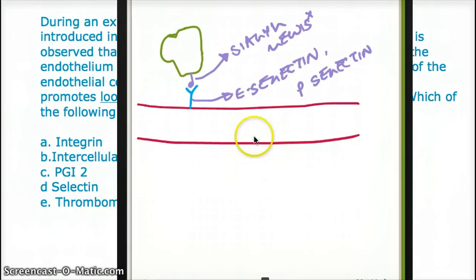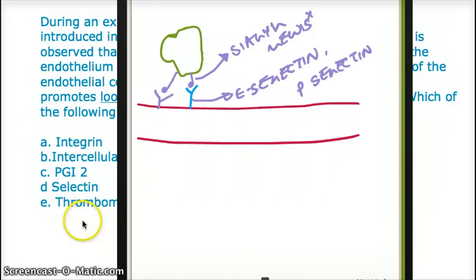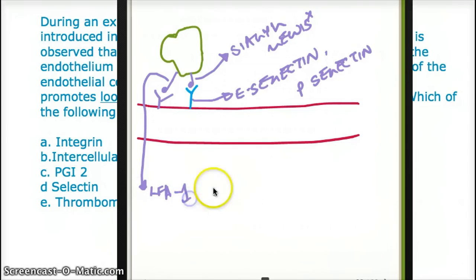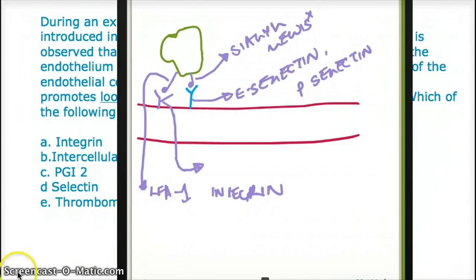Now, what about tight binding? If our neutrophils want to do tight binding, similar types of receptors are involved but called different names. The one sticking out from the white blood cell is called LFA-1-integrin, and the one sticking out from the vessel is called ICAM.